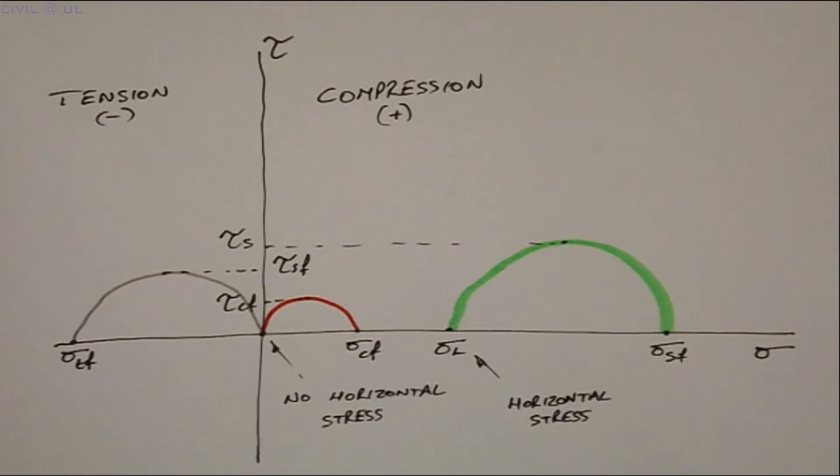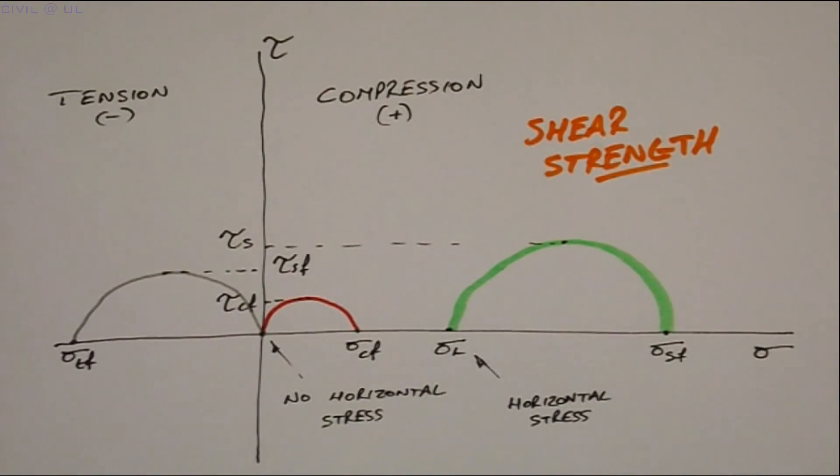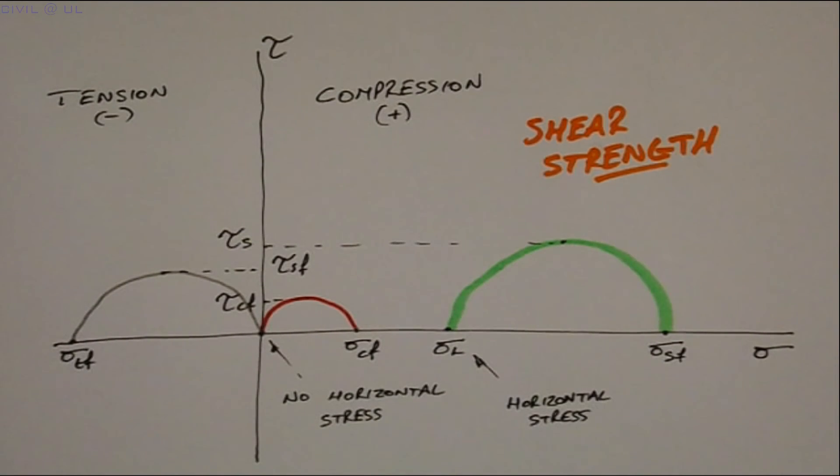Note that while we have tested materials in different ways, each material fails at a particular shear strength. And so, shear strength becomes a useful characteristic strength to be used when assessing material behaviour.